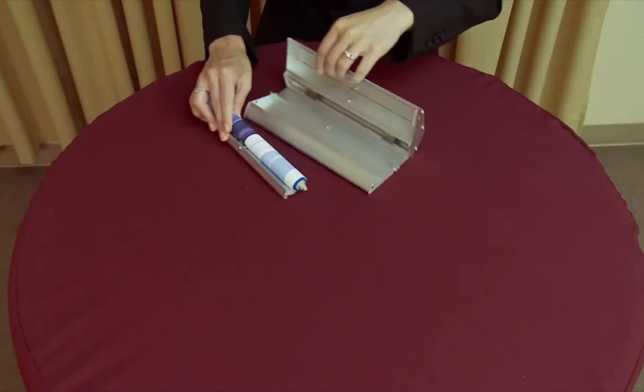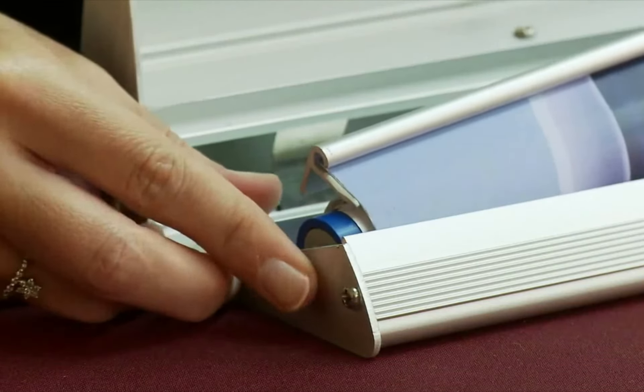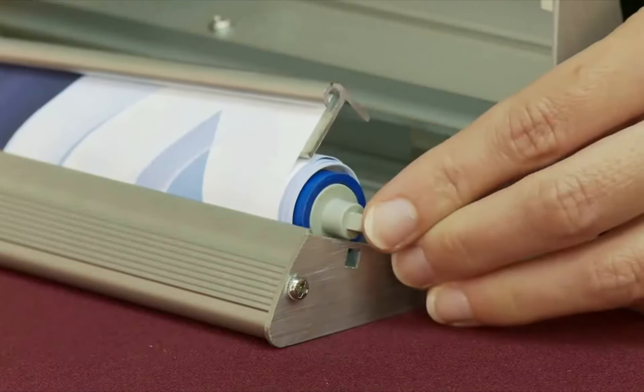Lock the roller into place by inserting the buttons located on the edge of the roller into the holes located on both sides of the base unit.